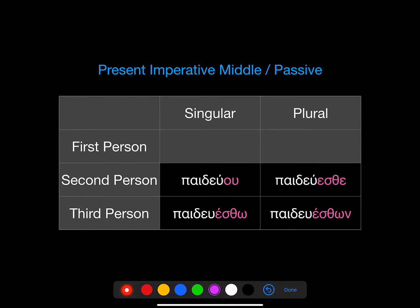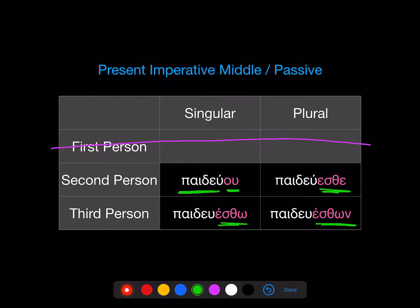There's also a present imperative middle passive. Just like with the present indicative, the same forms are either middle or passive depending on context. Again, there is no first person. You take the stem from the first principal part and add the present imperative middle passive personal endings: e, eto, este, eston.